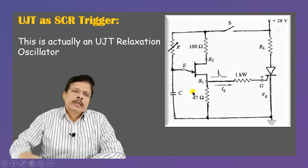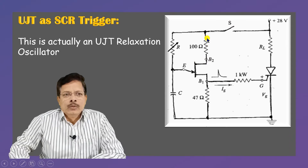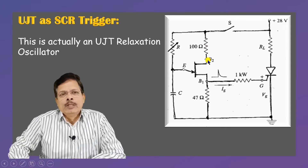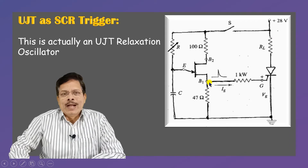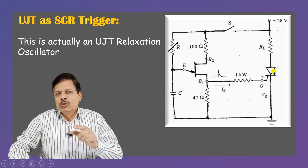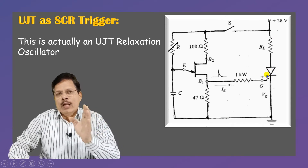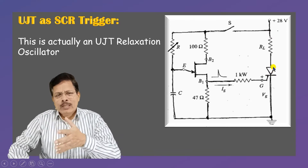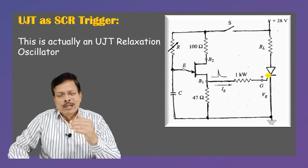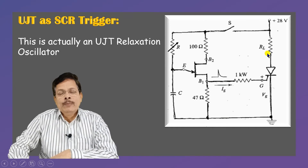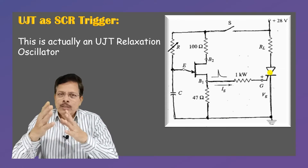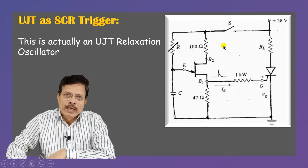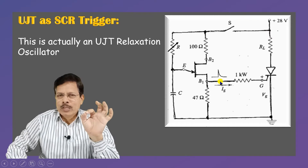You have studied this relaxation oscillator circuit before, and you know that this is the symbol for UJT. It has three terminals: base two, base one, and emitter. We focus on this UJT oscillator — the pulse generated at base one is coupled or applied to the gate of the SCR which we want to turn on. This SCR is part of a high power circuit with a large load and large voltage. When the SCR is on it carries current and power is delivered to the load; when it is off, no current flows and no power is delivered.